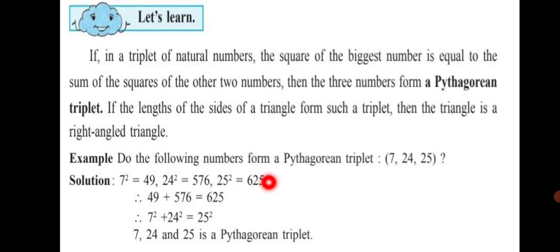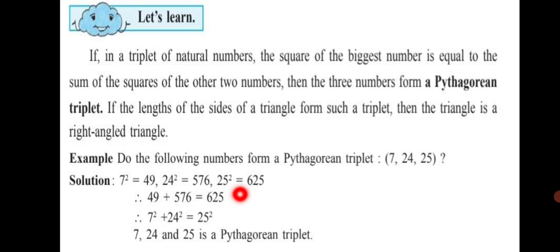Let's check. We write the squares: 7 square is equal to 49, 24 square is equal to 576, and 25 square is equal to 625. Now we add the squares of the smaller numbers: 49 plus 576 gives us 625. We can see that 7 square plus 24 square is equal to 25 square.